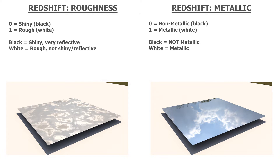When it comes to a metallic texture, a constant value of zero is not metallic — this means your surface is not a metallic surface. A value of one means your material is metallic. This can be done inside the Redshift material by changing the value from zero to one. When it comes to roughness, you can use any decimal value in between zero and one. When it comes to metallic, what you usually end up doing is either defining it as zero — not metallic — or one, which is metallic.